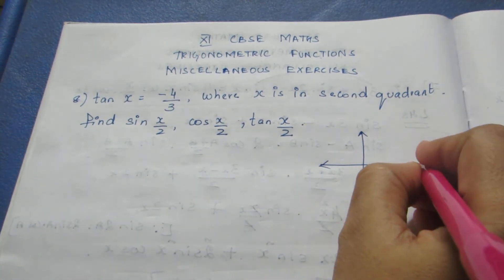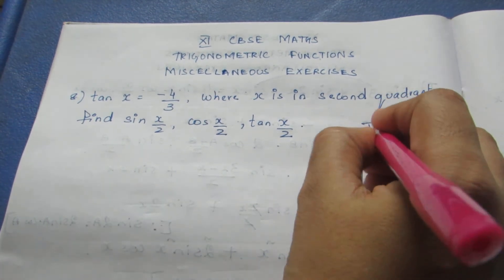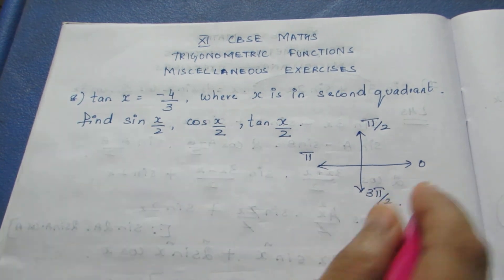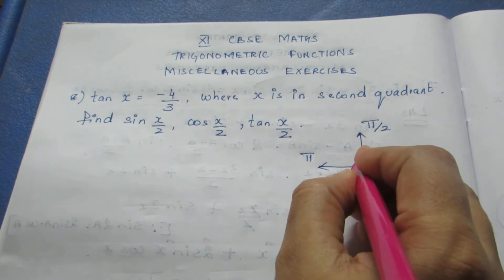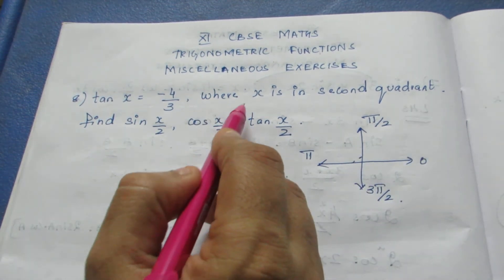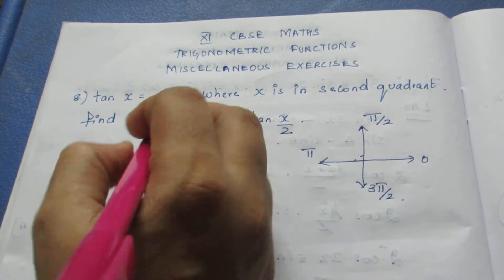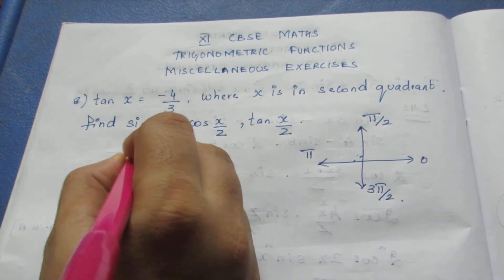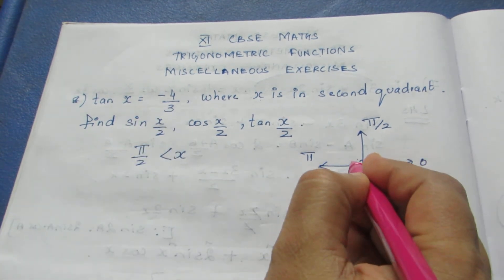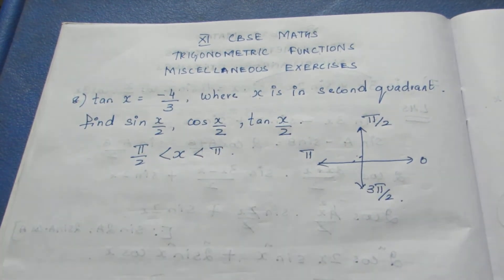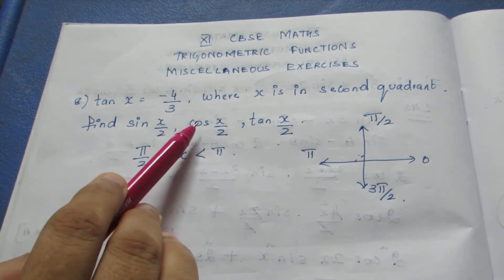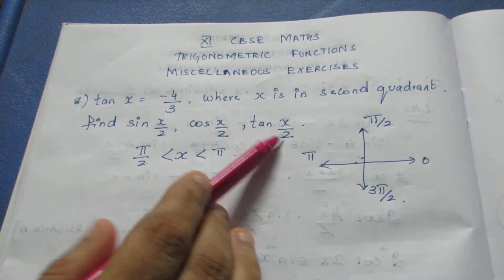We know this is 0, this is pi by 2, here it is pi, here 3 pi by 2. Since x lies in the second quadrant, that means x is greater than pi by 2 and less than pi. They have asked us to find sin(x/2), cos(x/2), and tan(x/2).